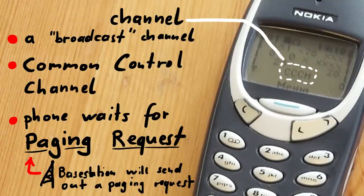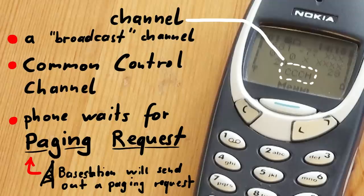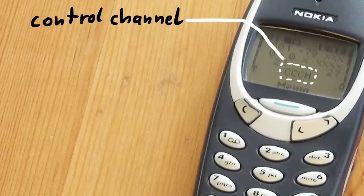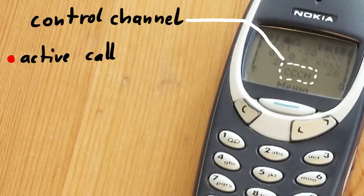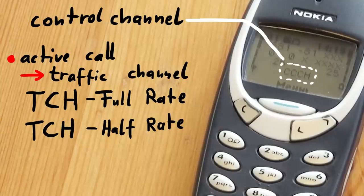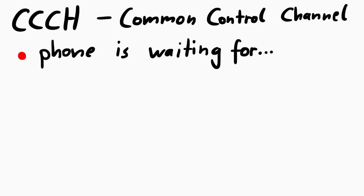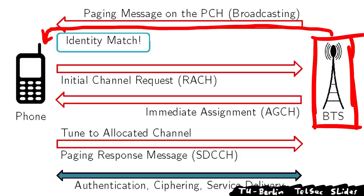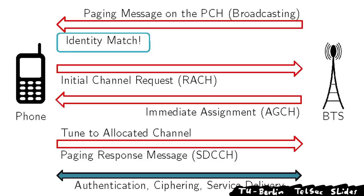The phone is currently listening to a broadcast channel called CCCH, or Common Control Channel. This is exactly where the phone expects to see paging requests. Paging requests are used by the network to notify subscribers about incoming calls or SMS messages. As soon as a paging request is received, the phone needs to establish a dedicated channel with the network. If we were in a call, we would switch to a traffic channel — either TCH Full Rate or TCH Half Rate.